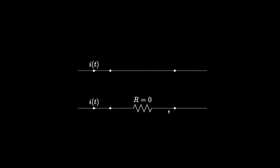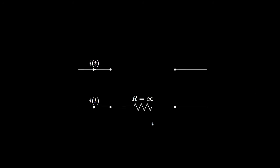In general, resistance values range from zero to positive infinity. At one extreme, a resistance of zero corresponds to a simple wire, or what we commonly call a short — the voltage across a short is always zero, independent of the current. At the other extreme, a resistance of infinity corresponds to an open circuit. Because the conductance, which is the reciprocal of resistance, is zero, the current through an open is always zero regardless of the voltage across it.